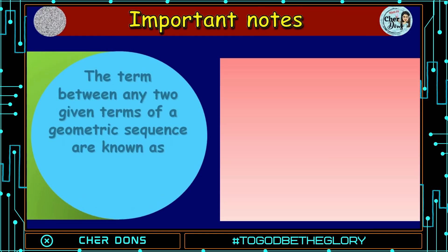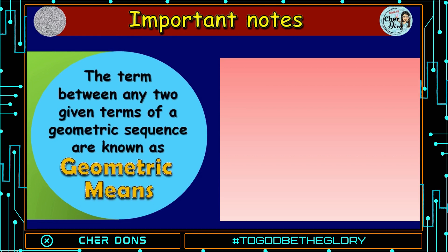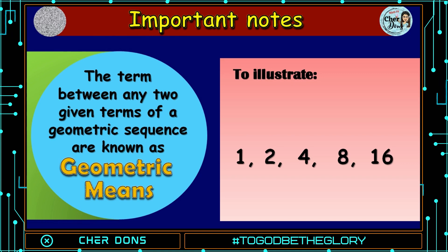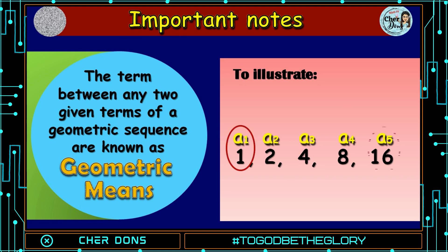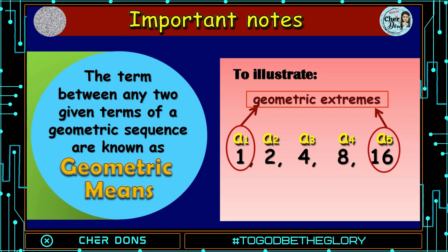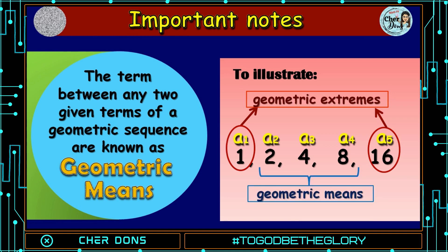The terms between any two given terms of a geometric sequence are known as geometric means. To illustrate, consider the sequence: 1, 2, 4, 8, and 16 — where A sub 1 is 1, A sub 2 is 2, A sub 3 is 4, A sub 4 is 8, and A sub 5 is 16. The first and last terms of a finite geometric sequence are called geometric extremes, which are 1 and 16. The terms in between are called geometric means: 2, 4, and 8.